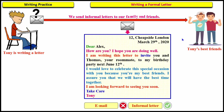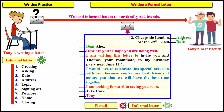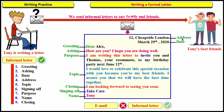Every part of a letter has a specific name. The letter in front of you has the following parts: greeting, date, address, asking, topic, signing off, purpose, name, and closing. Pause the video and match each element with its appropriate part of the letter. This is the address, this is the date, this is the greeting, this is asking about the person, the purpose, the topic, the closing, signing off, and the name.